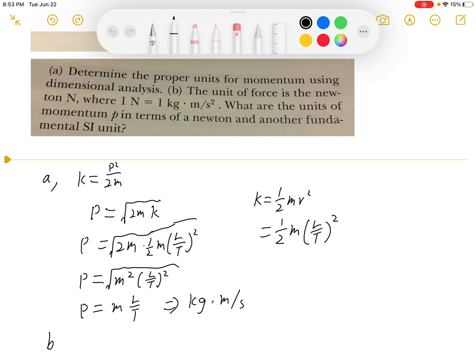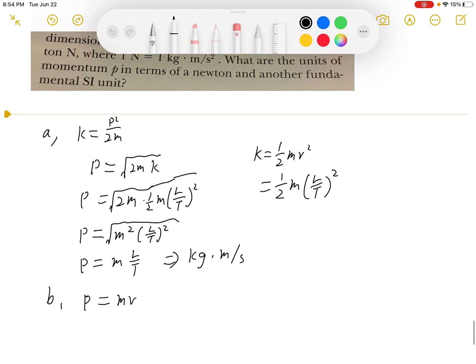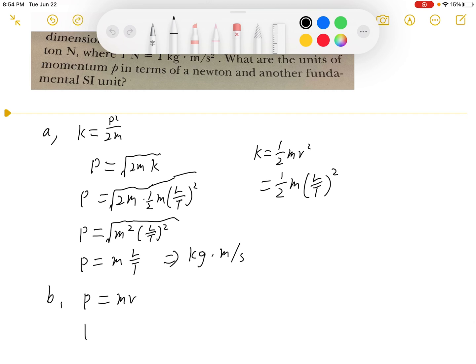For part b, we know from part a we can get P equals mv, but we need the units in terms of Newton. So we need to write this in force, so P is equal to force times time.